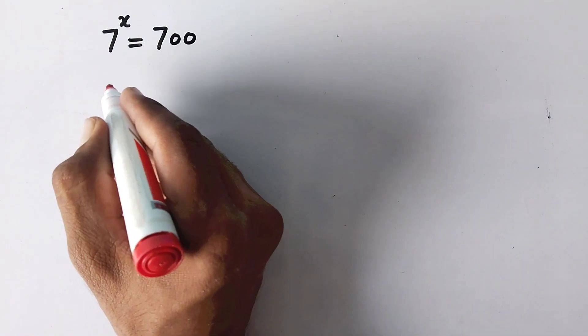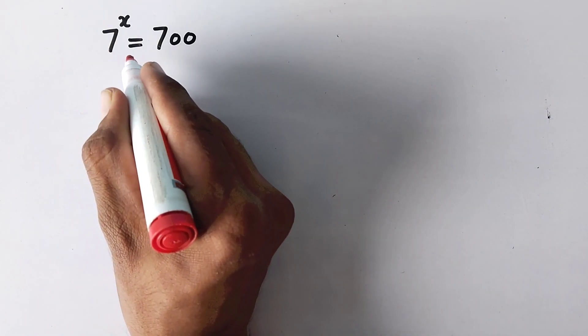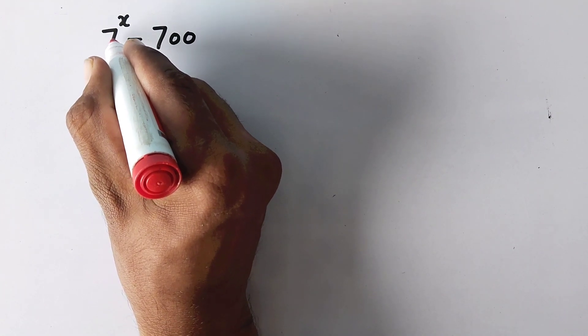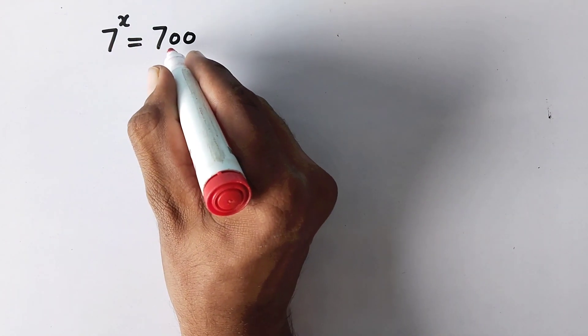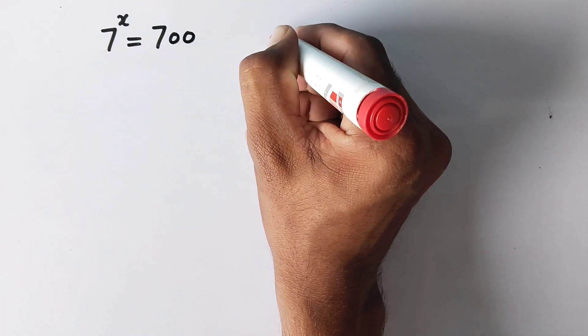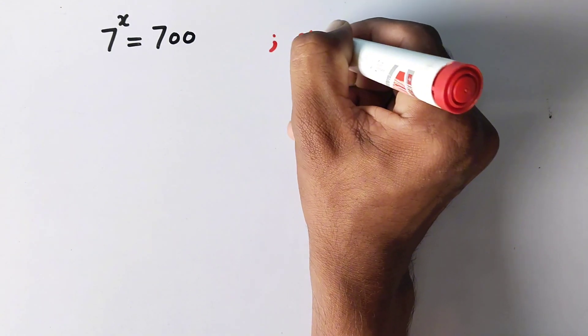Hi everyone, welcome to ExplodeMatch. Today we have to solve the question: 7 raised to power x is equal to 700, and we have to find the value of x.